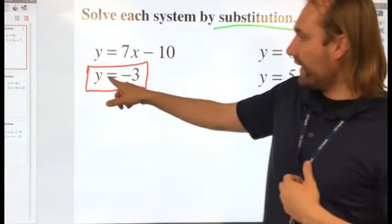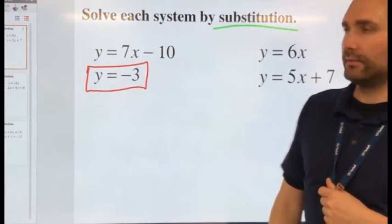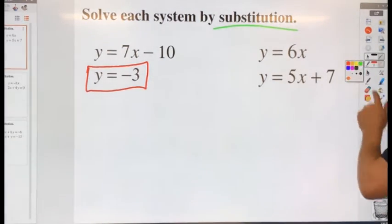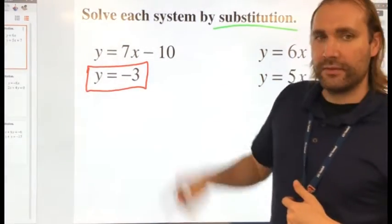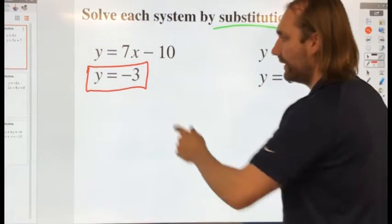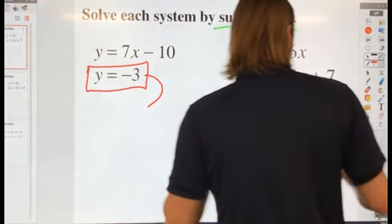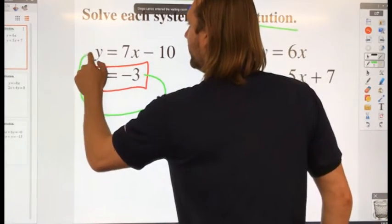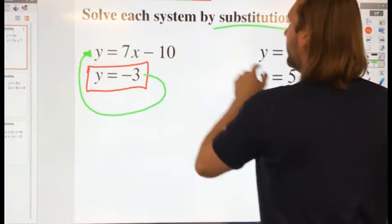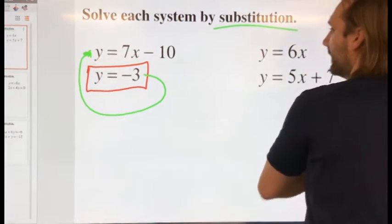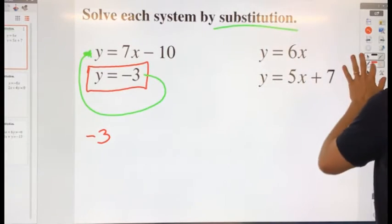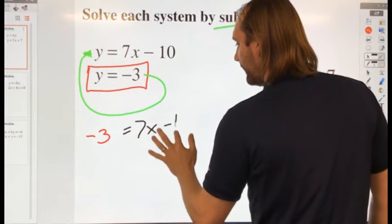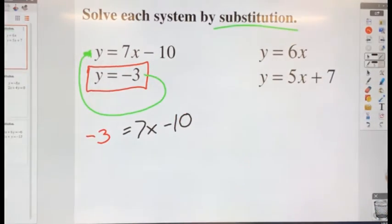So what should I do with y equals negative 3 to help me find, if we're talking about substitution? What can I do with this negative 3? Plug it in. Plug it into the other equation, right? So I'm going to plug in negative 3 here for this y. Now, that's going to give me negative 3 equals 7x minus 10. And now I have an equation with just one variable to solve and I'll go ahead and solve for x.